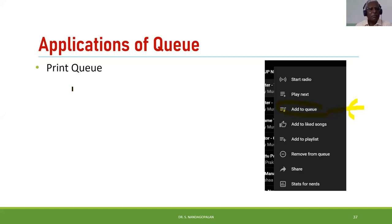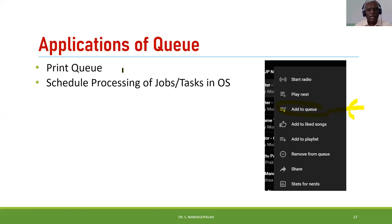A very standard application is the print queue. Assume there is only one printer connected to many systems. If everyone sends a print command simultaneously, it cannot print everything at once — print jobs must be put in a print queue so they can be taken up one by one.